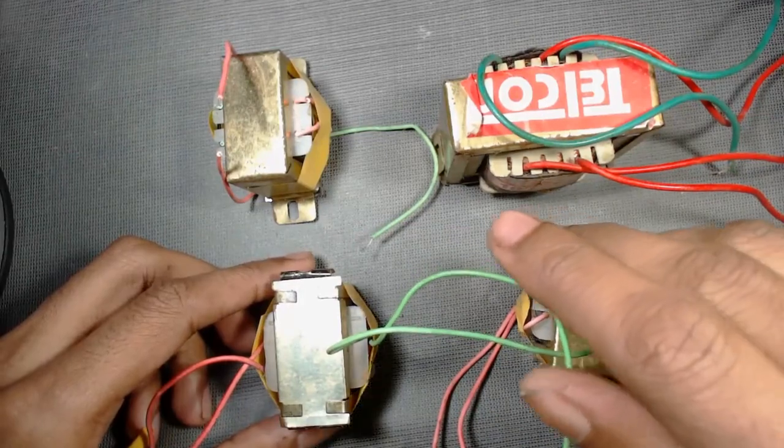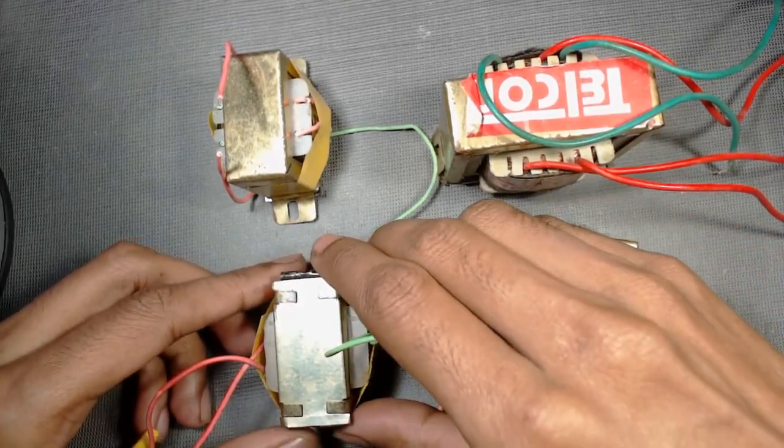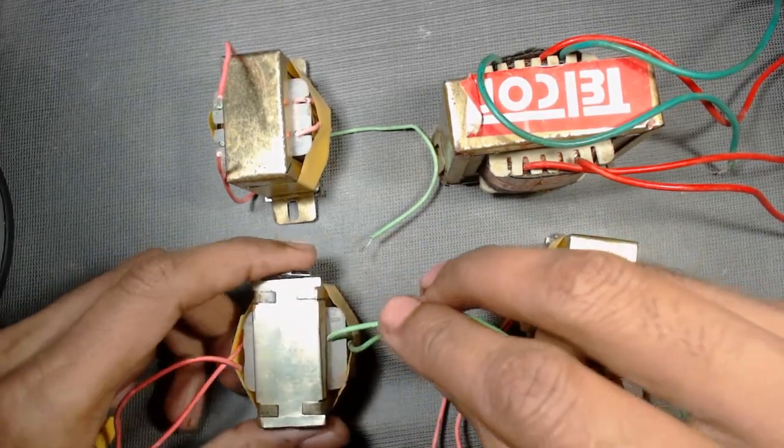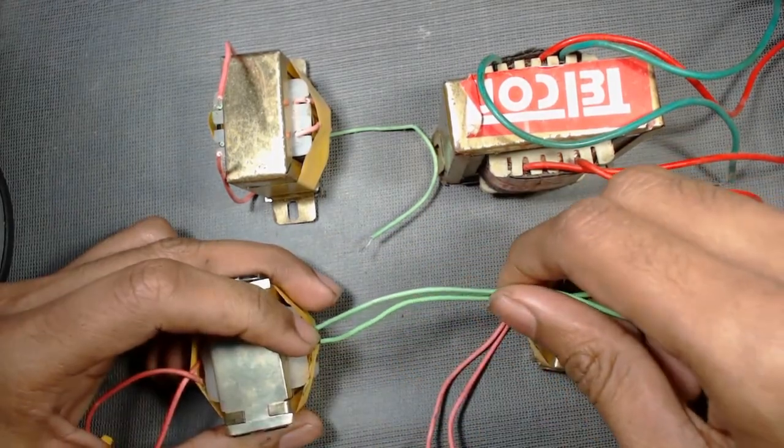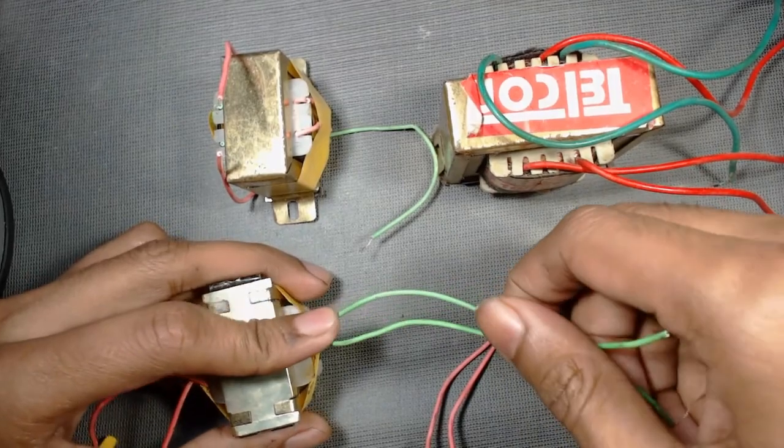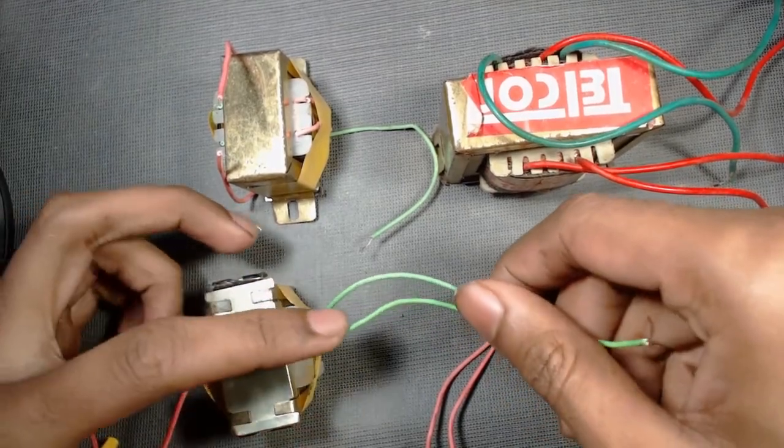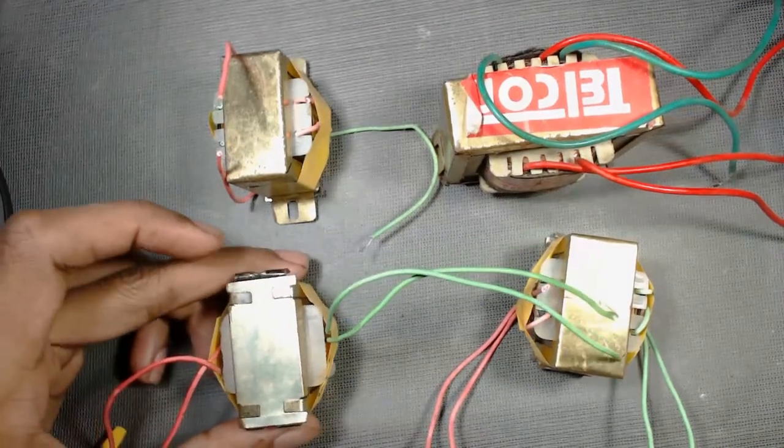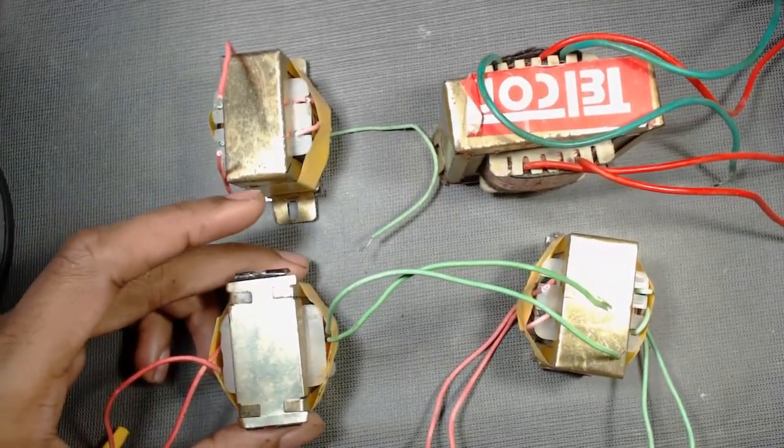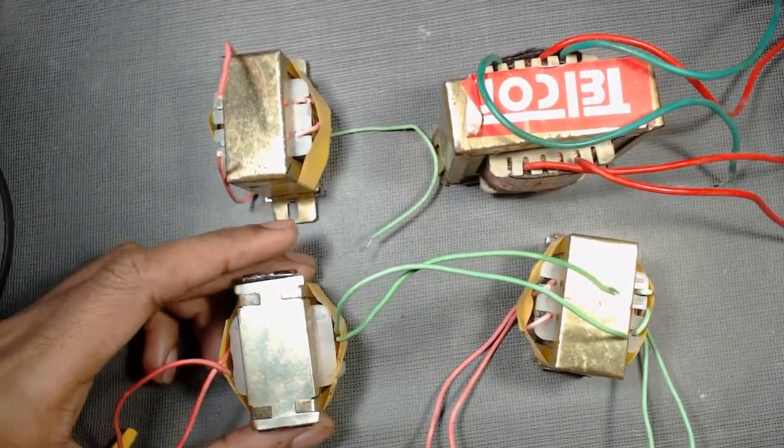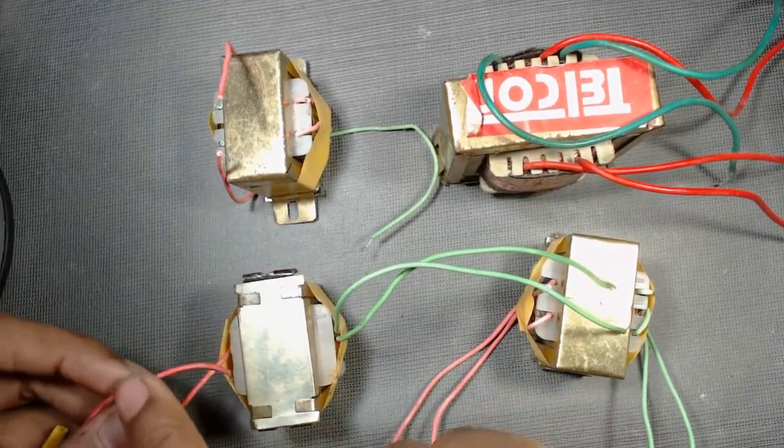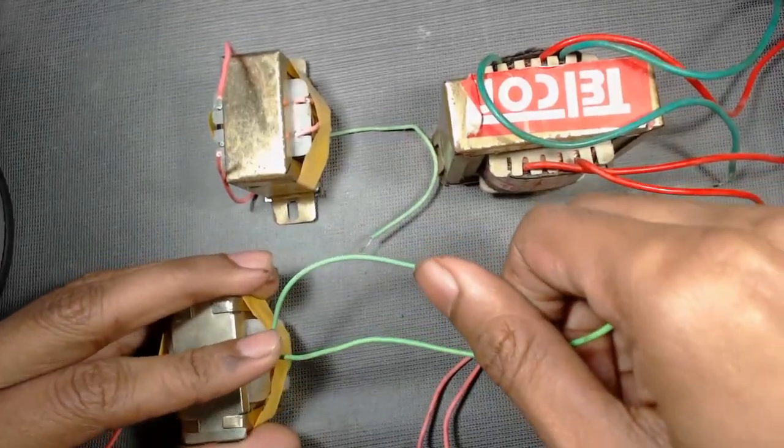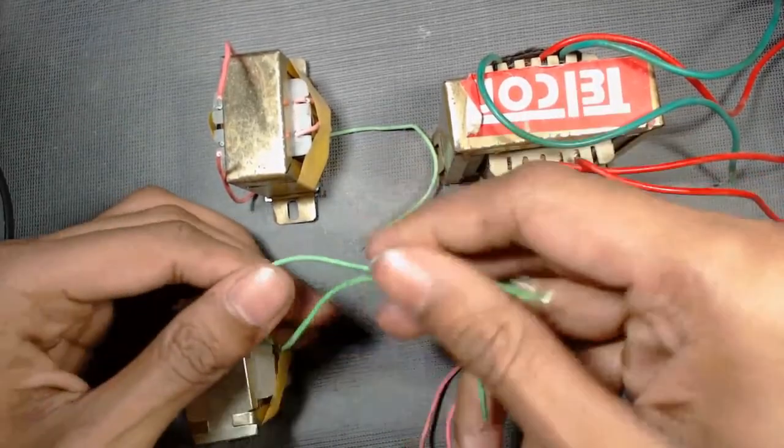After identifying the primary and secondary sides, we can proceed to connect the transformer in our circuit. For this transformer, this is the secondary side as its terminals are green. It is a 220 volt 6 volt transformer. So, if we connect 220 volt AC at the primary side, then we will get 6 volt AC at its secondary side. That means here.